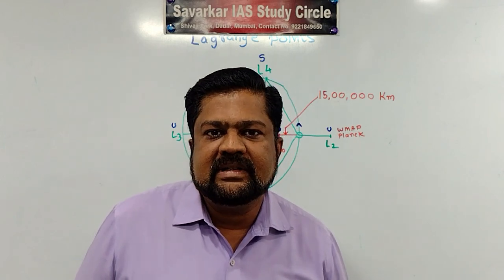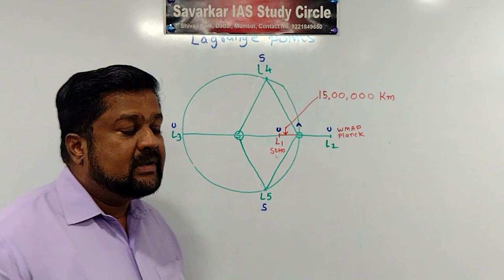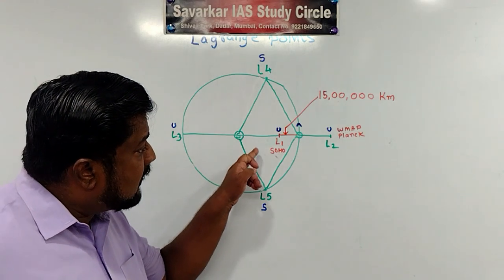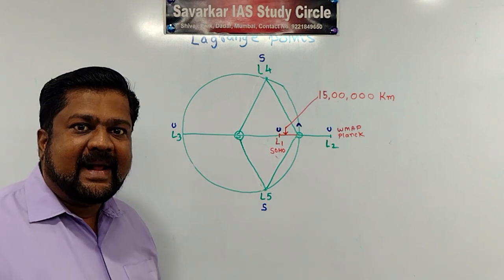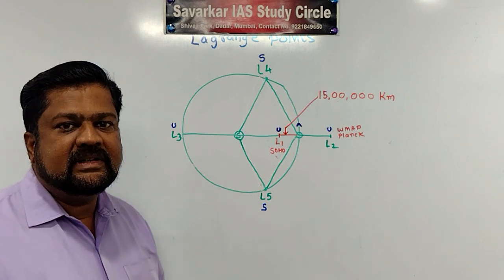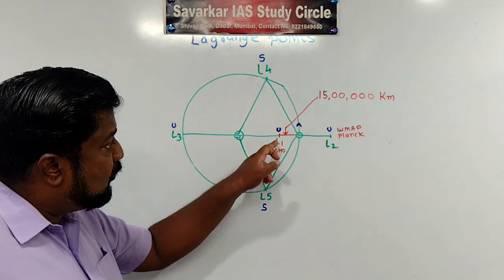But yet considerable mass is there for Earth also. So when two massive bodies are there, at that time certain points are there. They are called as Lagrange points. They are mathematically calculated by an Italian scientist. And these points are somewhat like this.